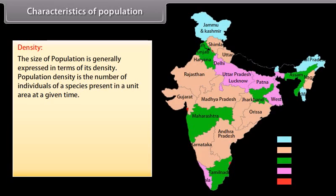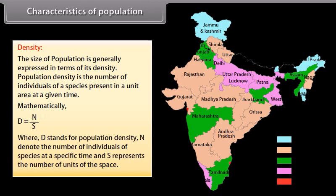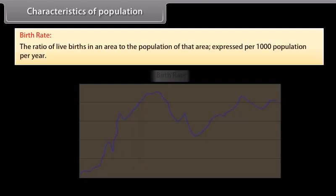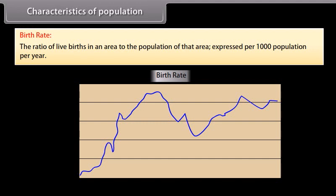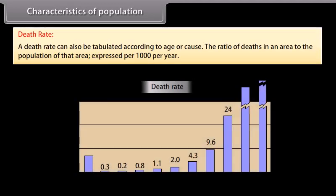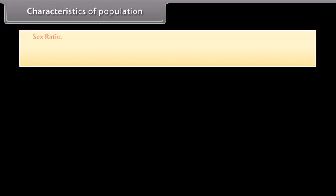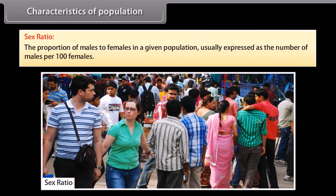Characteristics of population: Density — the size of a population is generally expressed in terms of its density. Population density is the number of individuals of a species present in a unit area at a given time. Mathematically, D = N/S, where D is population density, N is the number of individuals, and S is the number of units of space. Birth rate is the ratio of live births in an area to the population, expressed per 1,000 per year. Death rate is the ratio of deaths in an area to the population, expressed per 1,000 per year. Sex ratio is the proportion of males to females, usually expressed as the number of males per 100 females.